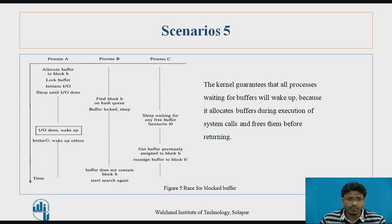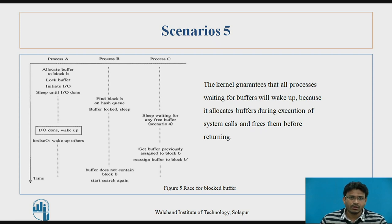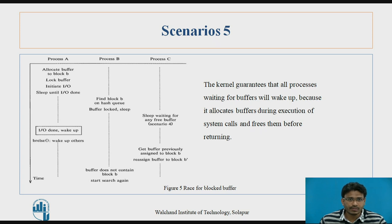When process A completes its IO operations, it wakes up, performs its remaining operations, and releases the buffer using the brelse (buffer release) function, which wakes up the other processes. Process C gets the buffer previously assigned to block B and reassigns the buffer to block B. Process B finds that the buffer no longer contains block B and starts searching again.